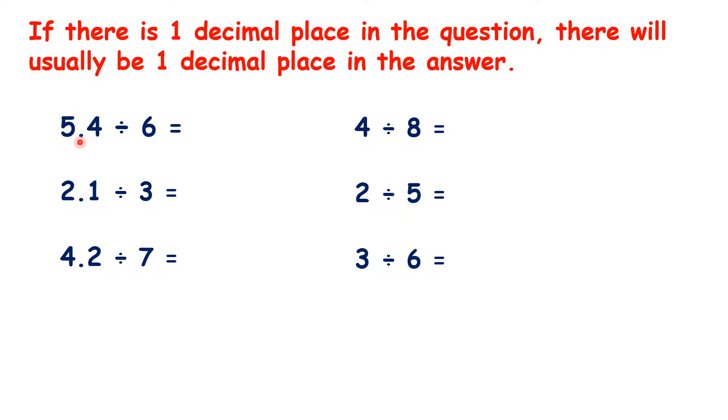So our first question is 5.4 divided by 6. And if we know that 54 divided by 6 is 9, we know that 5.4 divided by 6 is 0.9. So we have one decimal place in the answer.